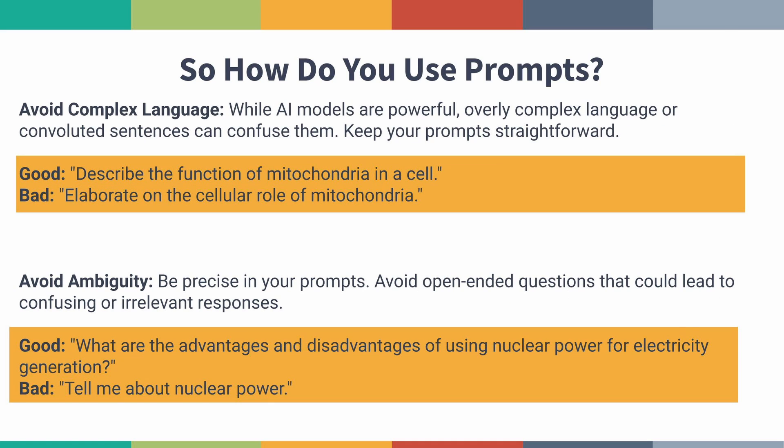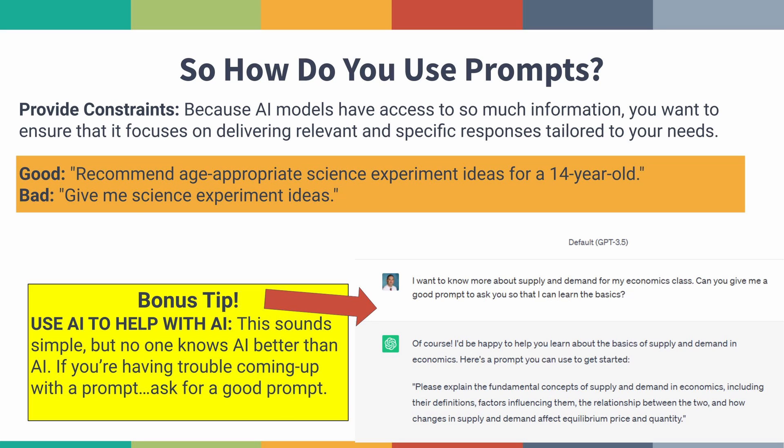It's also really important that students avoid using complex language. Sometimes they might feel like they have to speak smarter instead of conversationally. The more concise and clear what they're asking, the better results they'll get. They should also avoid ambiguity — if they want advantages and disadvantages, they need to ask that specifically, because an open-ended question will get a really big response like the photosynthesis answer. Perhaps one of the best habits is providing constraints. AI has access to so much information and doesn't know who it's talking to, so if they say 'explain it to me like I'm 12,' AI will understand the audience and provide appropriately leveled language.